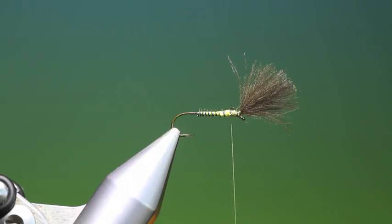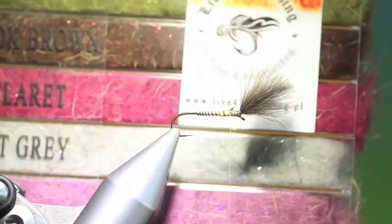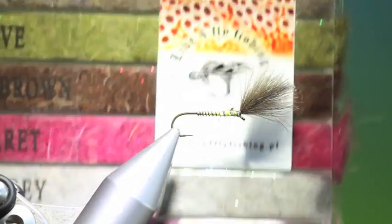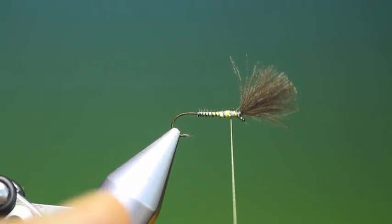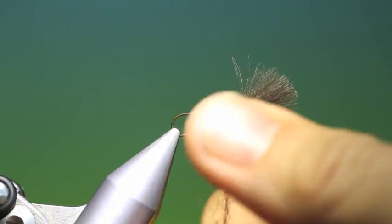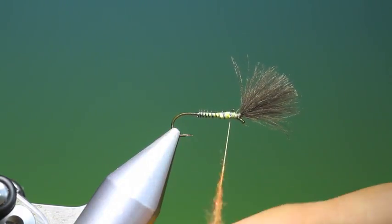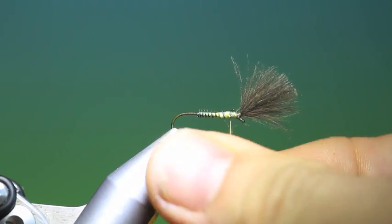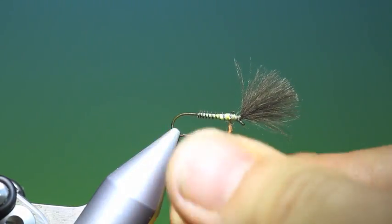Then we want a little bit of red brown dubbing. This is from Live for Firefishing. A very nice spiky bit of dubbing. A bit of flash in it. You don't need much here just for the thorax.